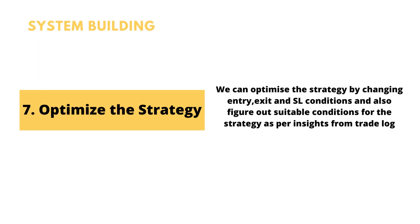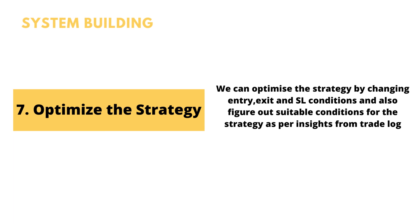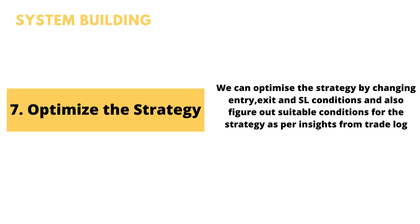The seventh step is optimizing the trading strategy. A strategy is built through market hypothesis and market observations. You thought that buying above a five-minute candle high could give profits, but that might not be the case. So you can optimize the strategy by changing the entry conditions, stop loss conditions, and exit conditions — by observing the trade log you have maintained. For example, what if instead of exiting at a one-R profit, you exit at 3:15? Does it give more money? What if you change the stop loss? You can make various combinations and decide the best conditions for your strategy.